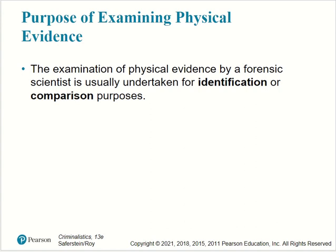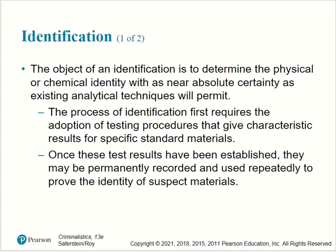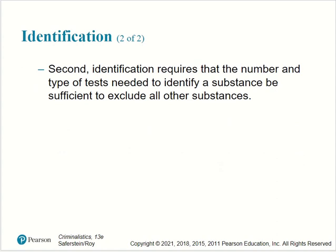The purpose of examining physical evidence by a forensic scientist is usually undertaken for identification and comparison purposes. The identification process determines the physical or chemical identity of an object with as near absolute certainty as existing analytical techniques will permit. This first requires the adoption of testing procedures that give characteristic results for specific standard materials. Once established, these tests may be permanently recorded and used repeatedly. The identification also requires that the number and type of tests be sufficient to exclude all other substances.